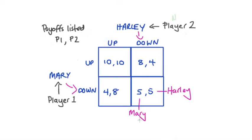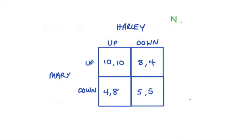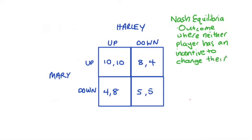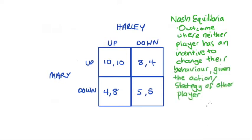Now that we understand the game we can solve for the game's Nash equilibrium. A Nash equilibrium is an outcome where no player has an incentive to change their behavior given what the other player is doing. Not all games have a Nash equilibrium and some games have more than one Nash equilibrium.